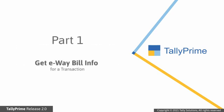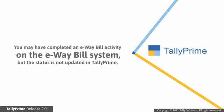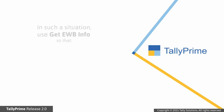Let's first see how to get e-way bill information for a transaction using the e-way bill report in Tally Prime. You may have completed an e-way bill activity such as generation or cancellation for a transaction on the e-way bill system or using any medium other than Tally Prime. However, the status of that transaction in Tally Prime is pending. In such a situation, you can use the Get e-way bill information option.